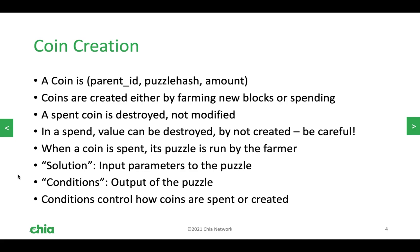Coins can only be created in general by spending. Farmers can create coins by farming block rewards, but we're going to consider the general case of spending a coin. So when a spend happens, the old coin is destroyed and a new coin is created. The coin ID from the parent is taken and put into the new coin, and a new puzzle hash and new amount is also assigned to that new coin. If all of the conditions check out for that spend, then those new coins are created.